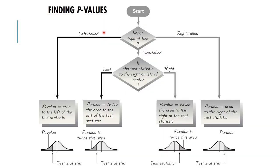This flowchart helps you visualize how to find the p-values. You'll have a left-tailed test if the alternative is a strict less-than, a right-tailed test if the alternative is a strict greater-than, and a two-tailed test if you have a not-equals situation. Follow the flowchart to decide how to find the p-value — essentially, where does the test statistic lie, and what area is more extreme in that direction?